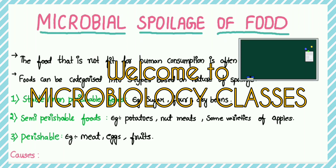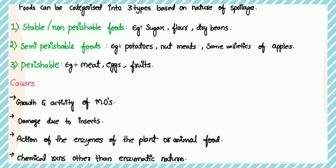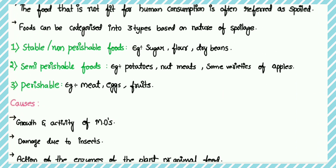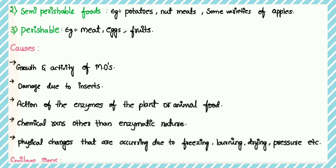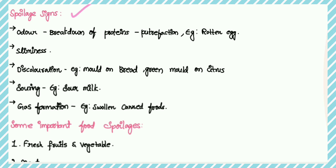Hello guys, welcome to Microbiology Classes. In the previous video we discussed about microbial spoilage of food. In this unit we discussed about categories of foods — there are three types on the basis of nature of spoilage — and we discussed about causes, spoilage signs, and some important factors for spoilage.